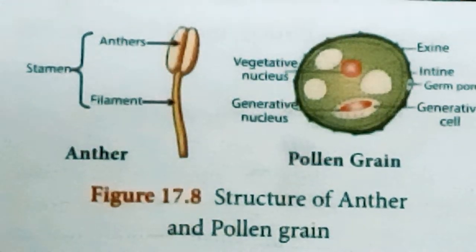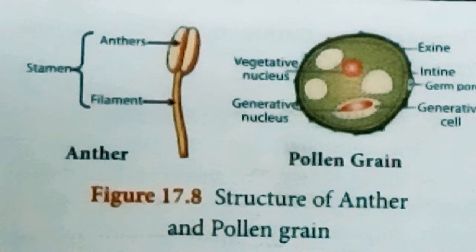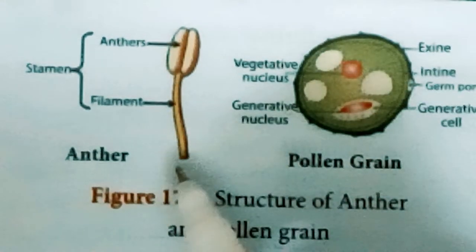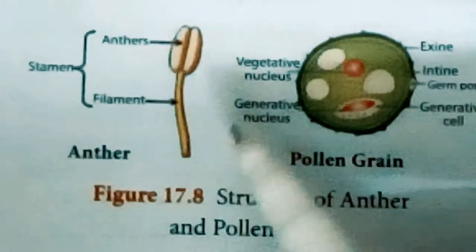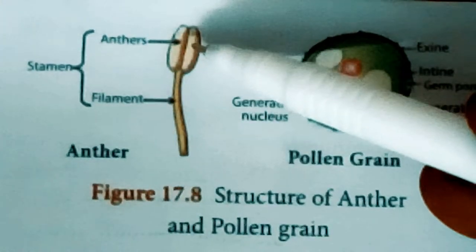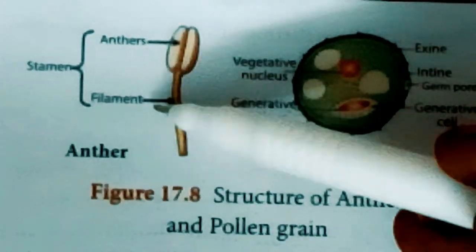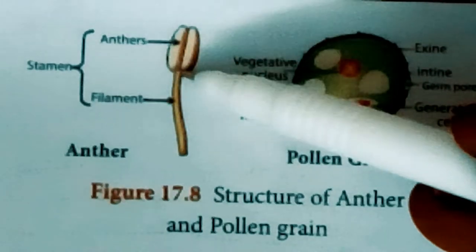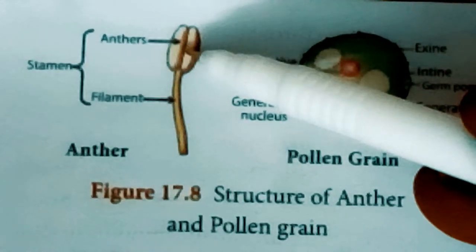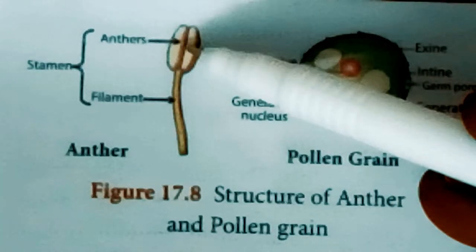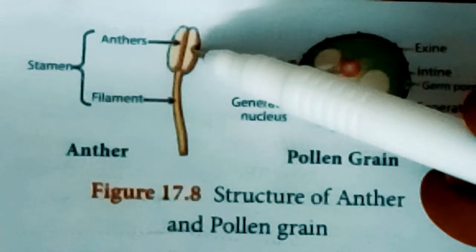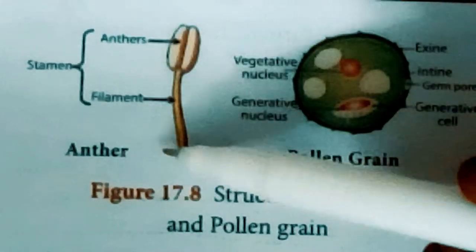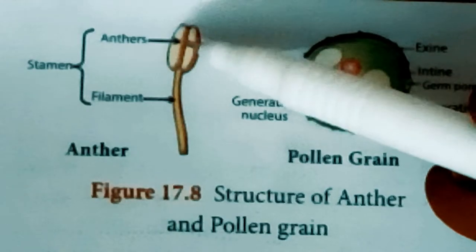Let us learn about the androecium. Androecium is the male part of the flower and it consists of the stamen. The stamen has two components: a stalk-like structure called the filament and a bag-like structure called the anther. The anther contains the pollen sac, and within the pollen sac, the pollen grains are produced. This is the structure of the androecium.